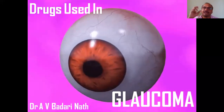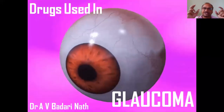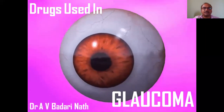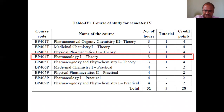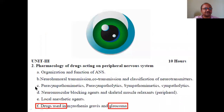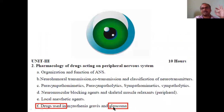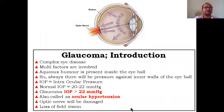Glaucoma is a disease of the eyeball. The eye looks like a cricket ball from the inside but we cannot see the complete eye directly. We are studying pharmacology as per the syllabus of the Pharmacy Council of India, for pharmacy students, and this is also common for MBBS and all medical and paramedical courses. Today's topic is drugs used in glaucoma.